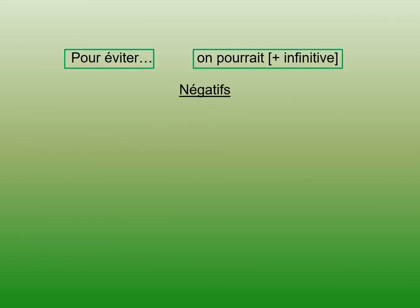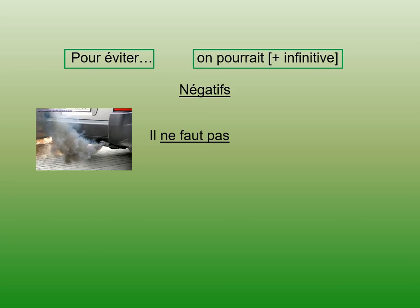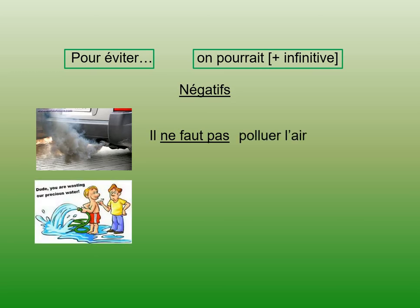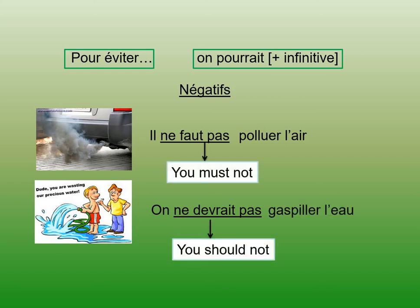I'll check those when you submit your work. We're now going to quickly look at some negatives. So instead of saying in order to avoid drought we could do something, it might be necessary to increase our range in writing to use a negative and say something like: in order to avoid drought, we must not do something. Either use 'il ne faut pas' to make 'il faut' negative — for example, you must not pollute the air — or instead of 'you could', use 'on ne devrait pas' — you shouldn't waste water.